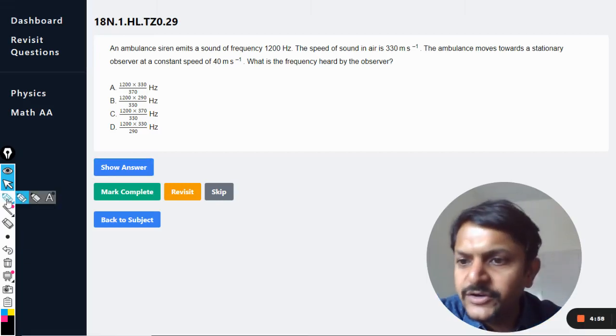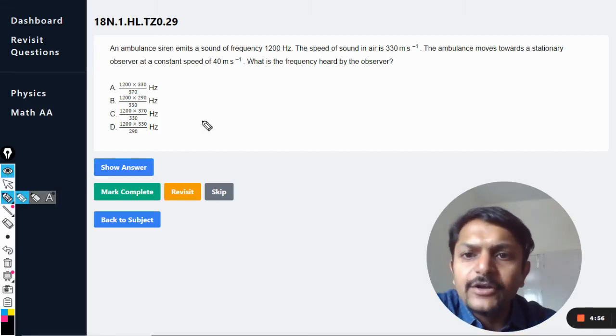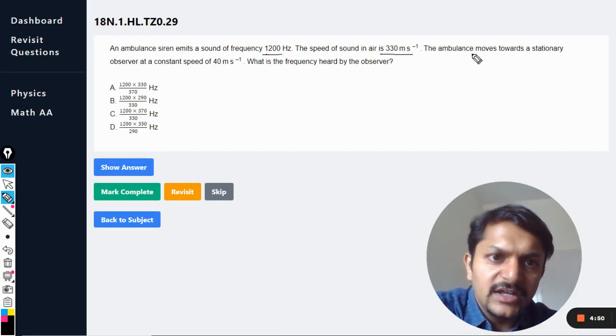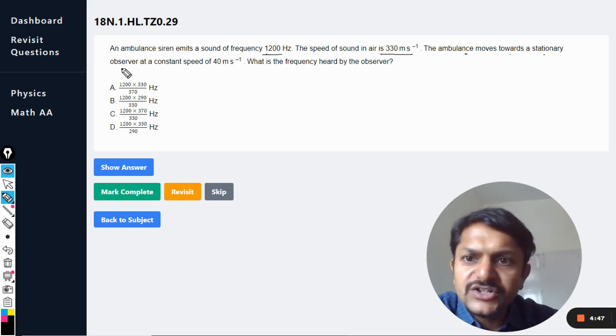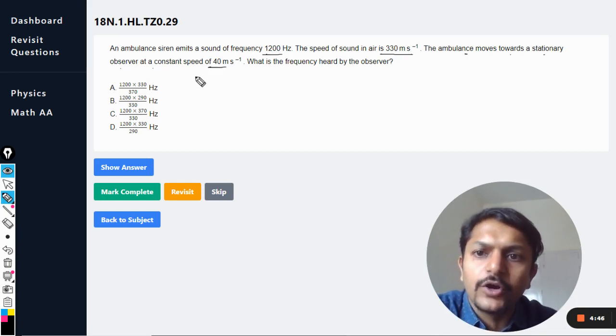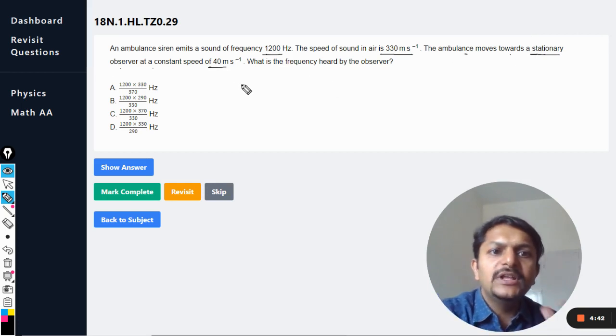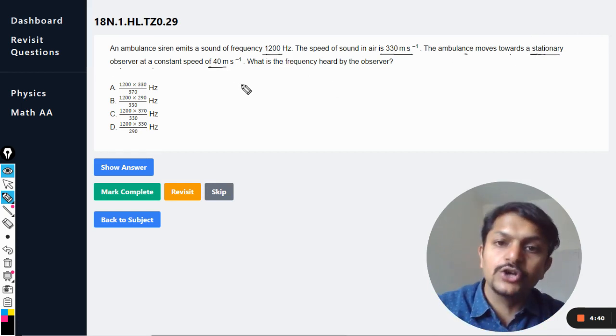Okay, dear students, let's see what is in this question. An ambulance siren emits a sound of frequency 1200 hertz. The speed of sound in air is 330 meters per second. The ambulance moves towards a stationary observer at a constant speed of 40 meters per second. So the observer is stationary and the ambulance is moving towards the stationary observer.